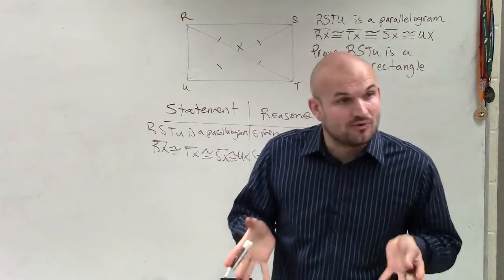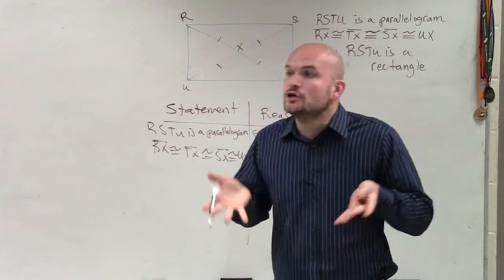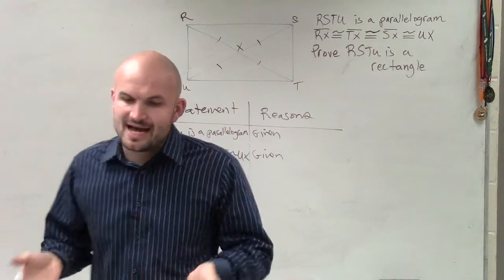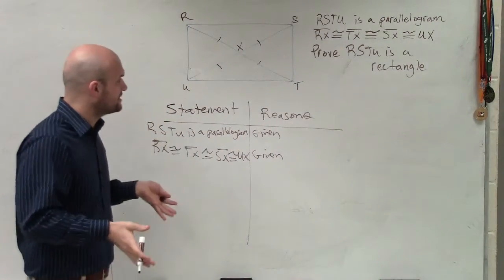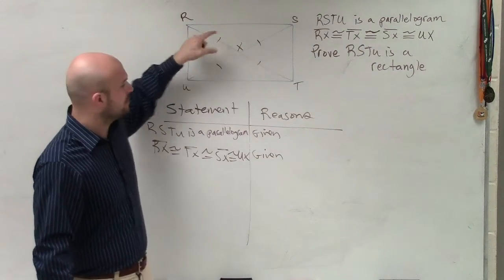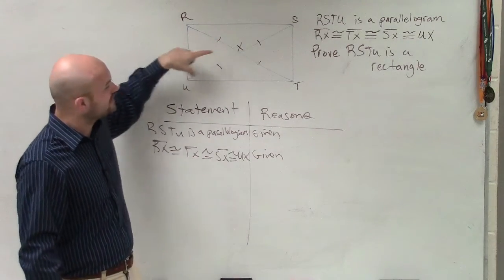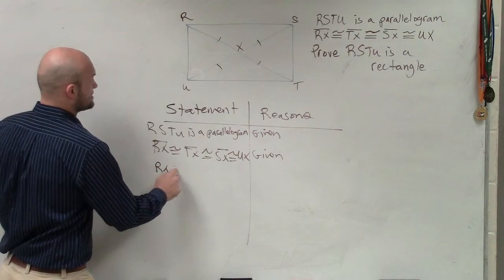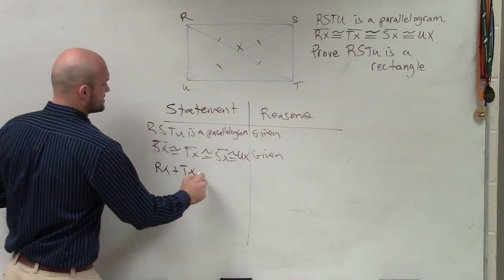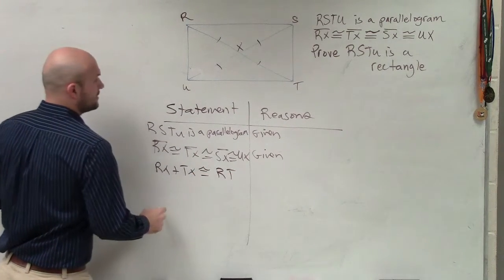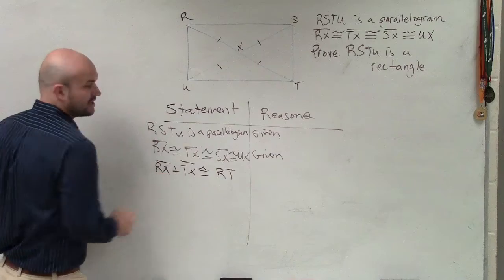We already, they say that RX is congruent to TX, which is congruent to SX, which is congruent to UX, right? But remember, to show that the diagonals are equal in measurement, we've got to be able to show that they are, or to be able to show that it's a rectangle, we've got to show that the diagonals are equal in measurement. So the next thing I would say is RX plus TX is congruent to RT. Would you guys agree with that?